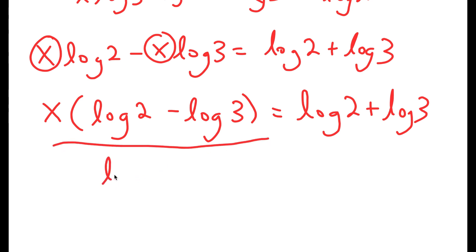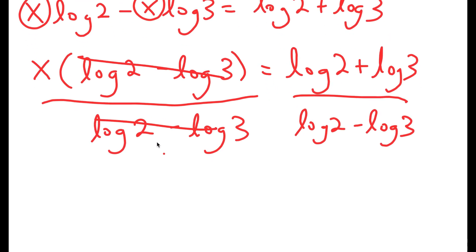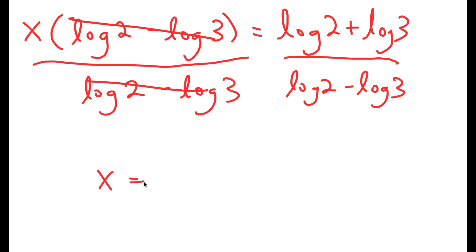And now from here I can divide both sides by log 2 minus log 3. So these two cancel out, and I get x is equal to log 2 plus log 3 over log 2 minus log 3.